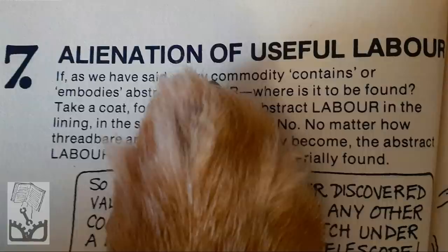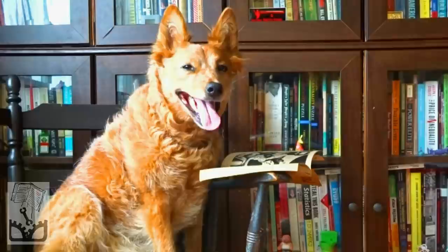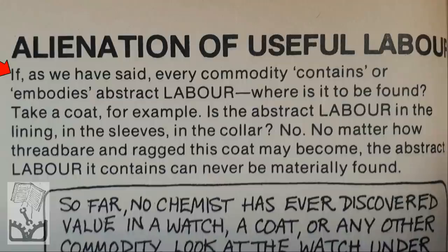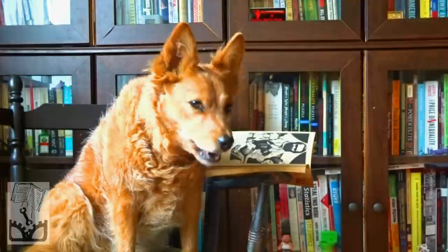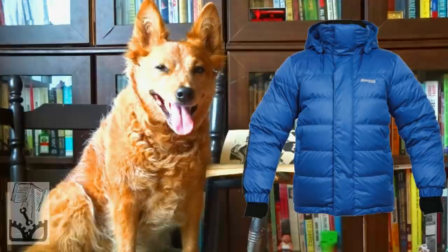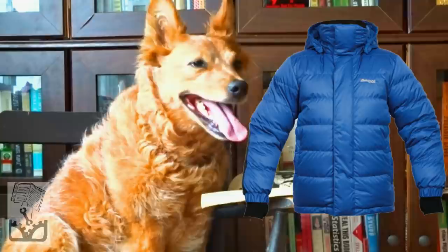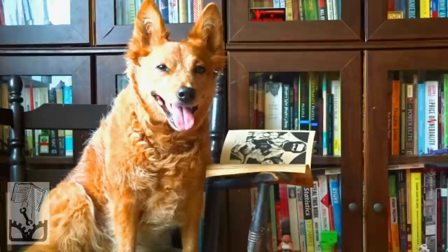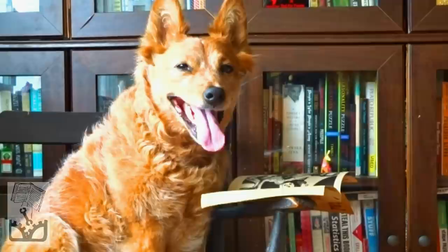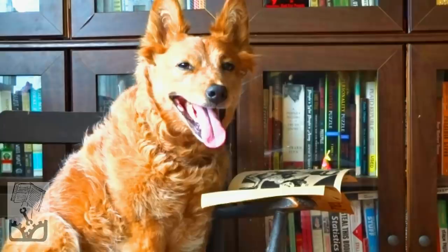Chapter 7: Alienation of Useful Labor. Smith and Evans ask: 'If every commodity contains or embodies abstract labor, where is it to be found?' Using the example of a coat, they note that abstract labor is not in the pocket or in the sleeve — no matter how hard you look, the abstract labor it contains will never be found. This is because abstract labor is a social construct — it can't be found in nature, it has no fixed value.